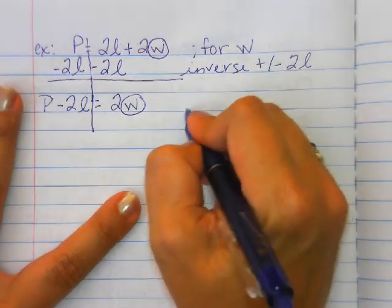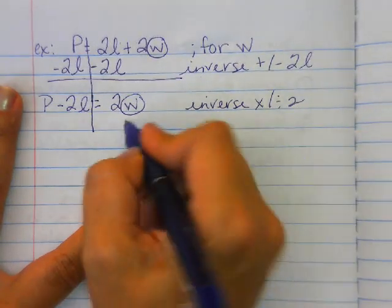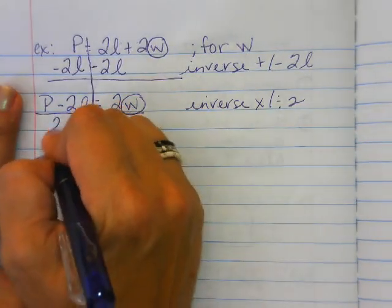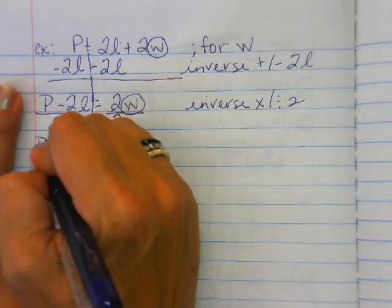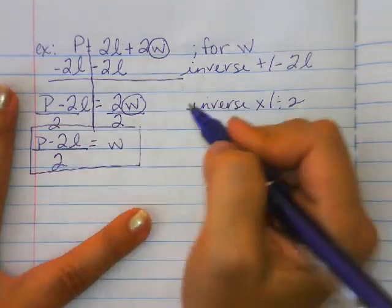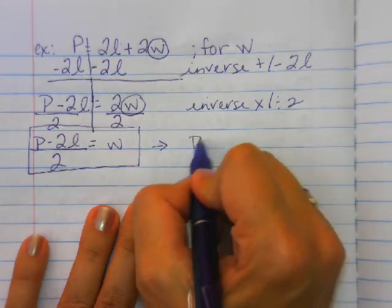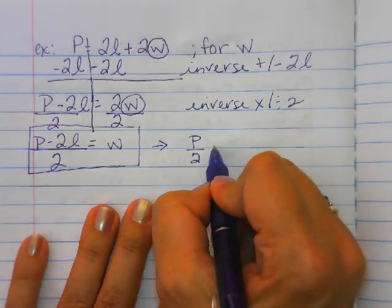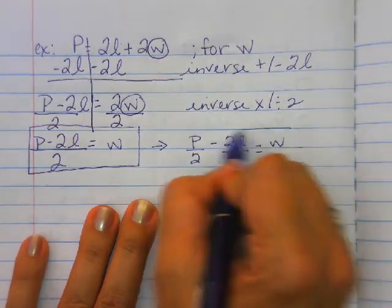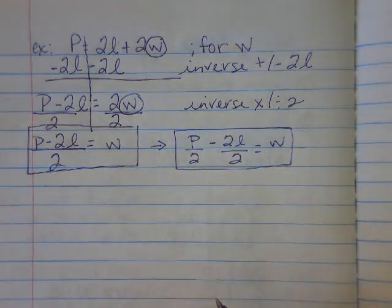And now I need to do inverse multiply divide by the 2 because it is being multiplied by 2 on w. So I can write w is equal to p minus 2l over 2. Another way you can write that, when you divide this whole thing by 2, you are actually taking both individual pieces and dividing them by 2. So you could also write it like this. Either way is acceptable.